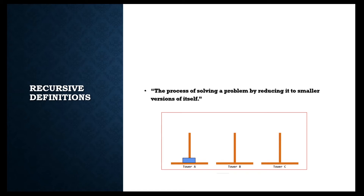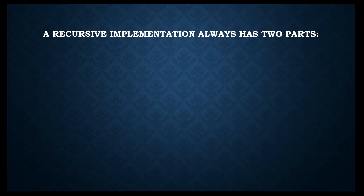Recursion is the process of solving a problem by reducing the problem itself — subdividing it into smaller problems. In the Tower of Hanoi example, we start with three disks and reduce the problem into smaller sub-problems: two disks, then one disk, and so on. Each time the method calls itself, it reduces the size of the problem, approaching the point where we can actually start solving it.